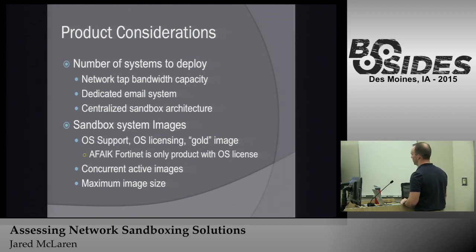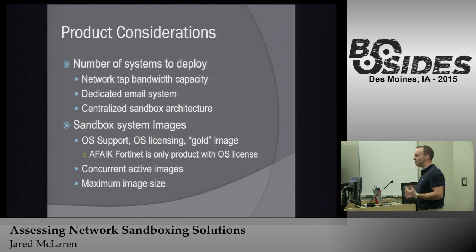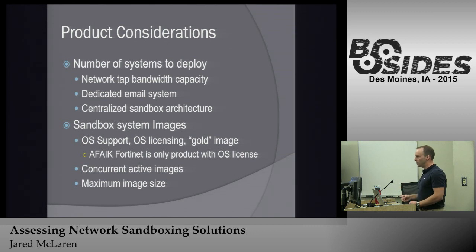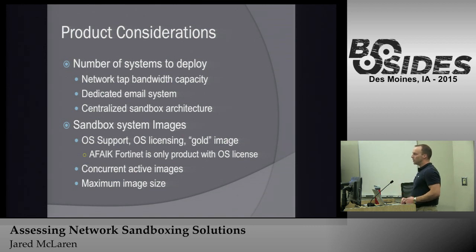From a sandboxed system images standpoint, vendors sometimes recommend deploying Windows XP SP2 unpatched with Office 97. Show of hands — how many run that on their network? Nobody. So when vendors like FireEye say they never have false positives, I find that misleading. Always check if you can upload a gold image of what you actually have on your network, and be aware of size limitations that may prevent you from installing Office. Also, Fortinet is the only device I know of that actually licenses the images you're running — so if you buy a box that can run 80 concurrent images, you need to buy 80 licenses.